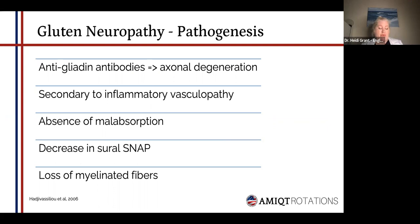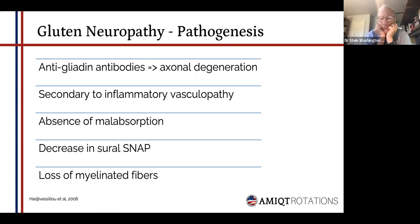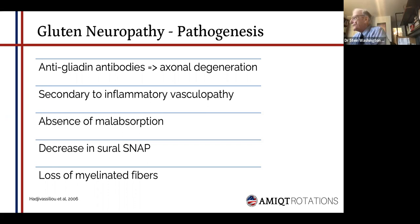It seems to be vasculopathy — a vasculitis — as opposed to just a pure immunological response. There are even some studies suggesting hypoperfusion of the brain as one of the reasons causing some of the neurological symptoms we see in celiac patients. One of the things that's quite pertinent to remember is that there's absence of malabsorption — so even if you take B12, folate, and any nutritional deficiency out of the picture, you still will see gluten neuropathy.